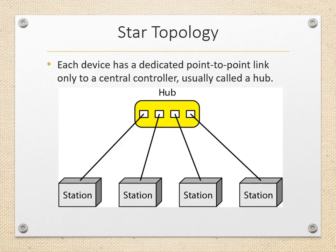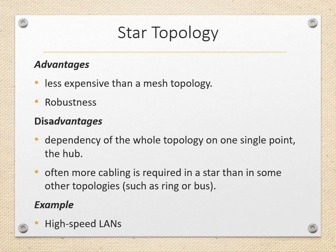Next is star topology. Each device has a dedicated point-to-point link to the central controller, called a hub. If one device wants to send data to another, it sends the data to the controller, which then forwards it to the other connected device. Advantages: it is less expensive than mesh topology because each device needs only one link and one I/O port. It is easy to install and reconfigure and requires less cabling between the device and the hub. It is also robust — if one link fails, only that link is affected. Fault identification and isolation are easy, and defective links can be bypassed.